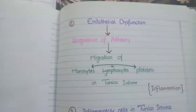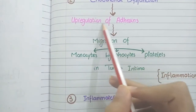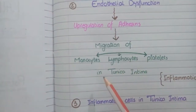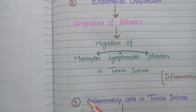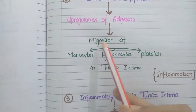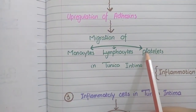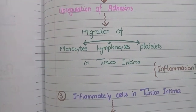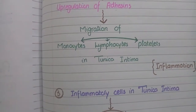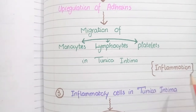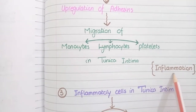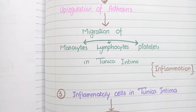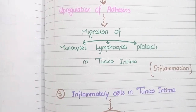Once endothelial dysfunction occurs, it is manifested as upregulation of adhesin molecules on the surface of endothelial cells. These adhesin molecules act as receptors and cause migration of monocytes, lymphocytes, and platelets from the blood vessel lumen into the tunica intima. This process is called inflammation, so endothelial dysfunction causes inflammation of the vessel wall.